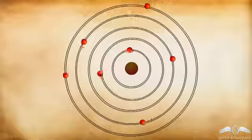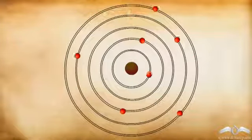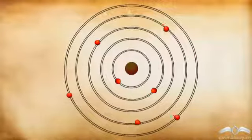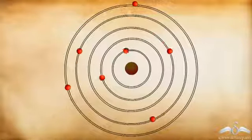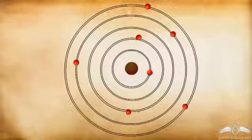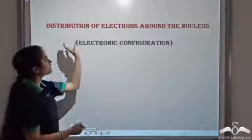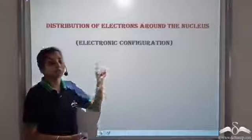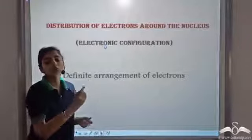This is the present accepted form of the structure of the atom, in which electrons revolve around the nucleus in fixed orbits or shells. The electrons are not distributed randomly — there is a definite pattern, a definite distribution of electrons around the nucleus, which is known as the electronic configuration of the atom. It is a definite arrangement of electrons around the nucleus.